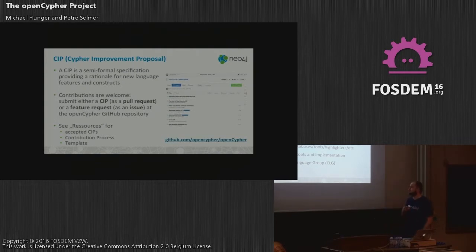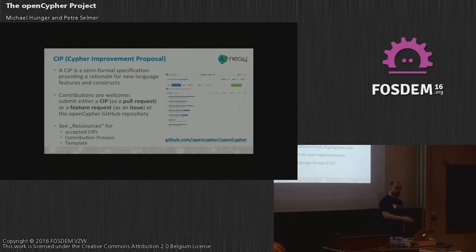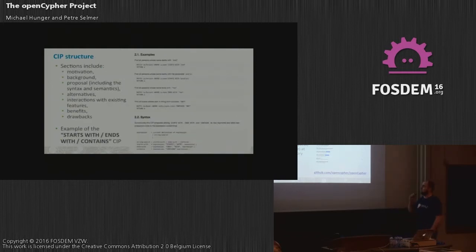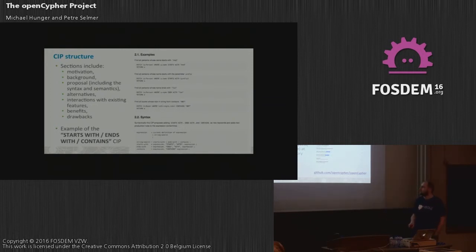We want to provide language documentation, tools, a reference implementation for Cypher, and have the whole thing governed by a Cypher language group. We considered giving it to an international standards organization, but that could kill the language. What we already have is the CIP — Cypher Improvement Proposal — where anyone with an idea to improve Cypher can send a pull request to the repository with some formal content. There are already a number of accepted CIPs, plus templates and information about the contribution process.